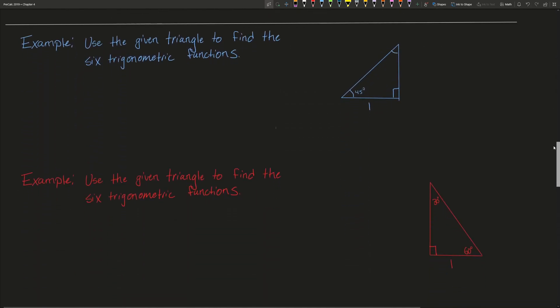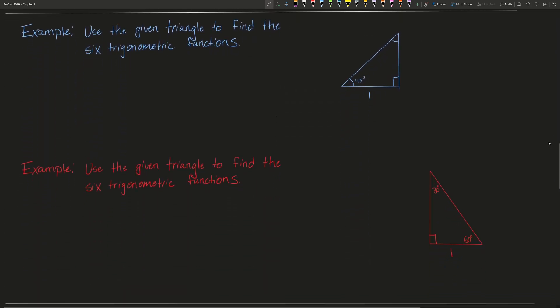Again, if we want to use the given triangle to find the six trigonometric functions, we do the same thing. In blue, we want to find the six trig functions of a 45 degree isosceles right triangle. Because this is a 45 degree isosceles right triangle, we know the other non-right angle is also 45 degrees. Because of this, the two legs are congruent, so they are both 1. So let's take the bottom left-hand angle as theta and start to find what we need.